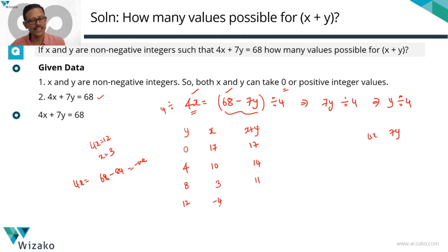x and y are non-negative integers. So this value is not possible. Any higher value for y, the value of x is going to only decrease and it's going to go into negative territory.